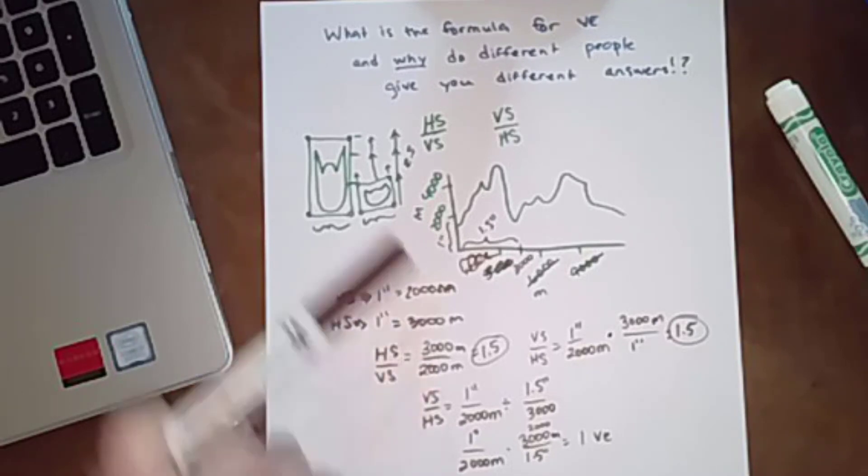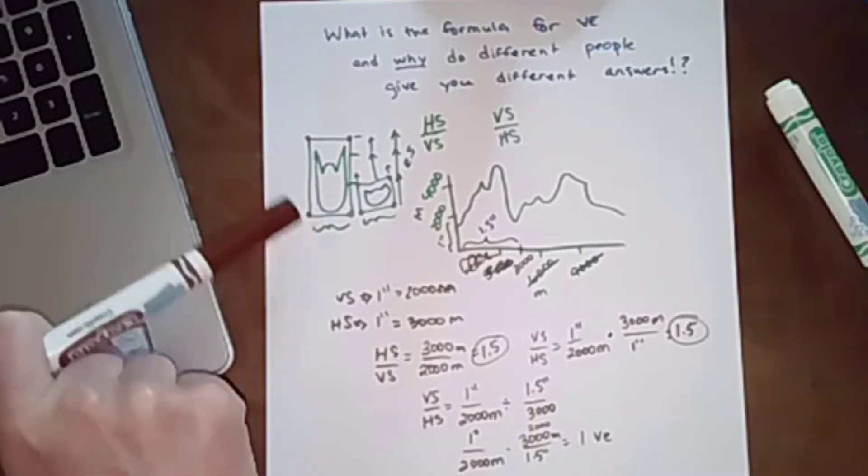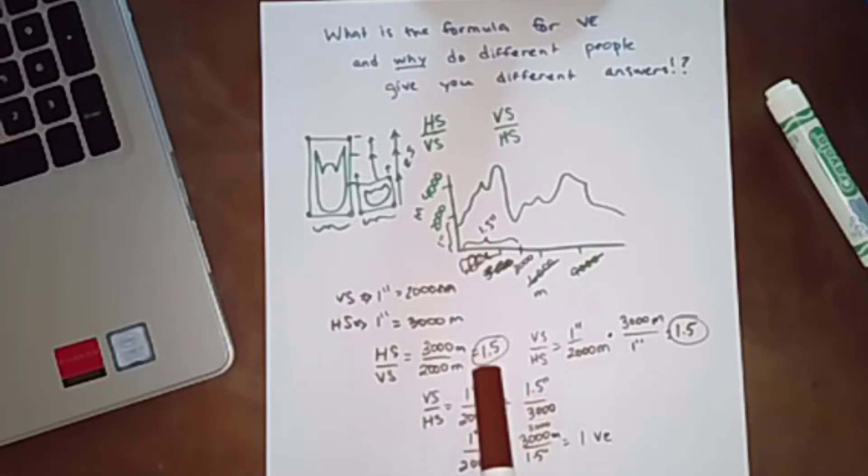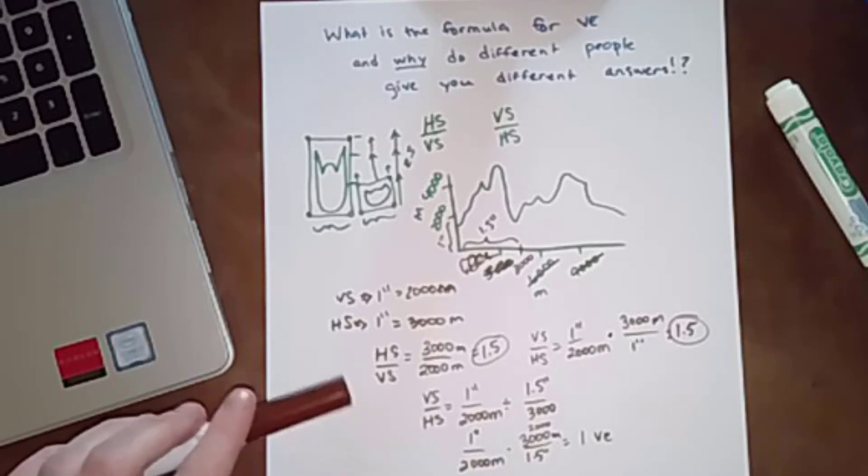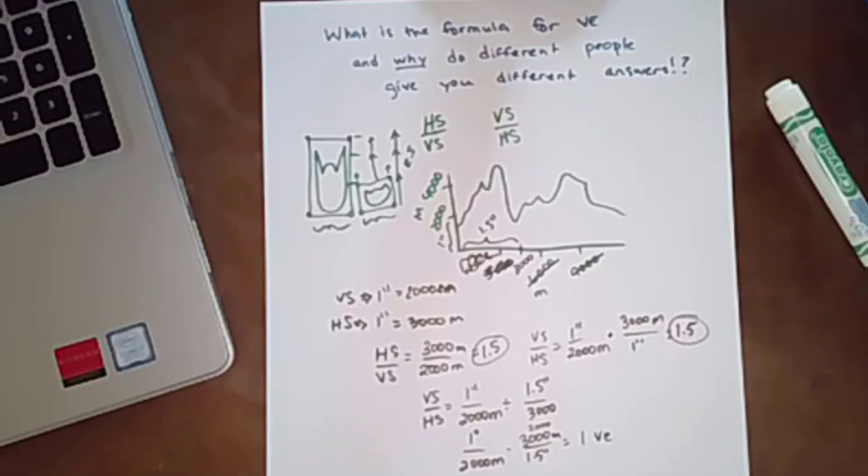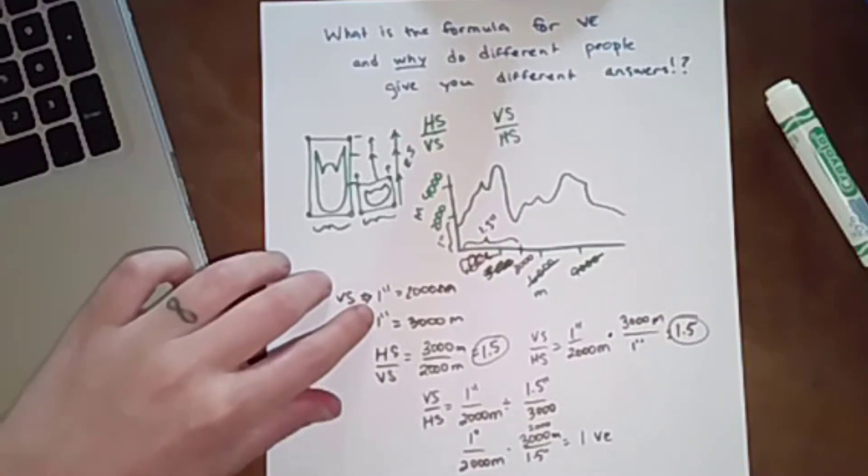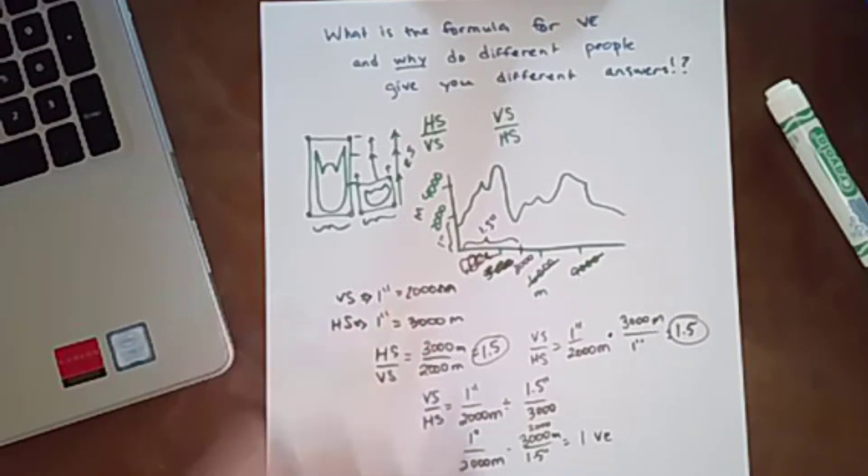So I hope that helps you see what vertical exaggeration is, why you might be given different formulas, and that either one you're going to get the right answer as long as you're using it correctly. So again, if you're given horizontal scale divided by vertical scale, make sure that your map distances are the same before you divide.